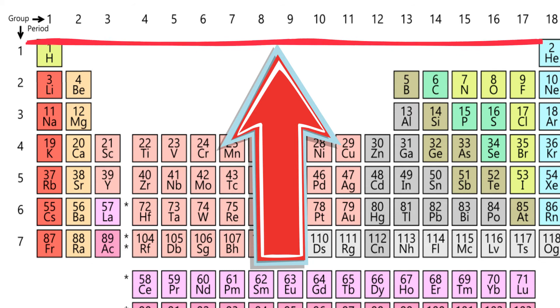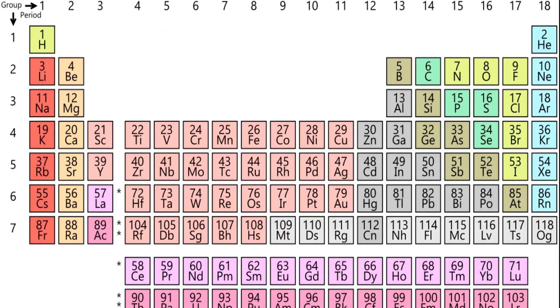Another method for naming the groups involves naming them 1A, 2A, then skip the transition metals, 3A, 4A, 5A, 6A, 7A, 8A.